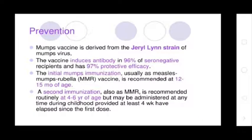Prevention of Mumps: The mumps vaccine is derived from the Jeryl Lynn strain of mumps virus. The vaccine induces antibody in 97% of seronegative recipients and has 95% protective efficacy. The initial mumps immunization, usually as the measles-mumps-rubella vaccine, is recommended at 12 to 15 months of age. The second immunization is recommended routinely at 4 to 6 years of age, but may be administered at any time during childhood, provided at least 4 weeks have elapsed since the first dose.